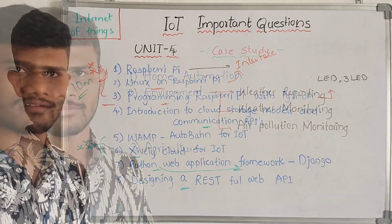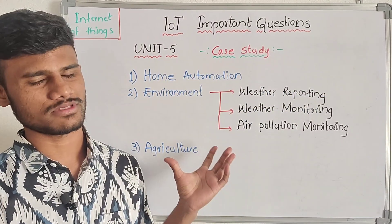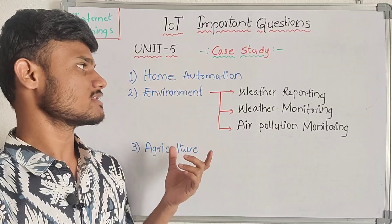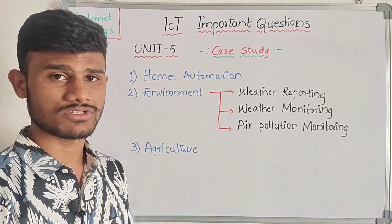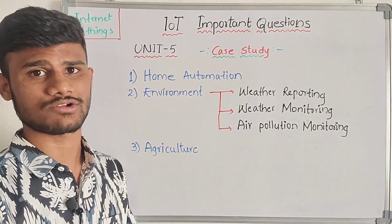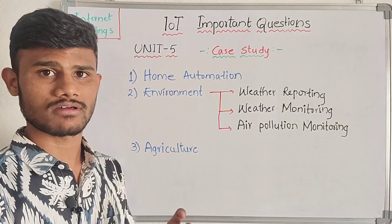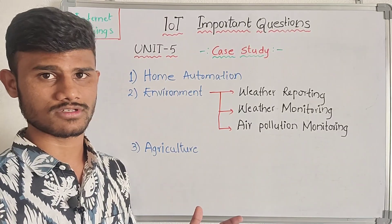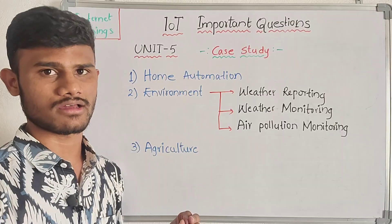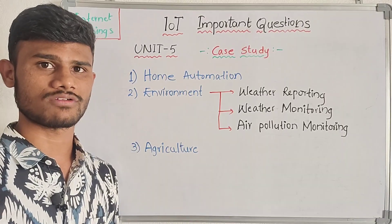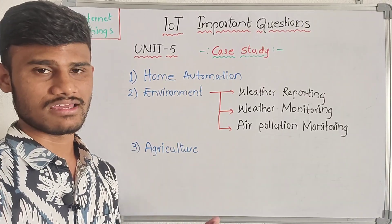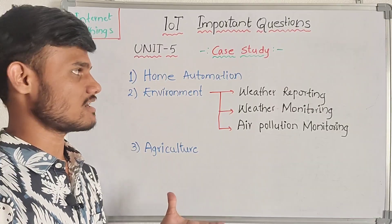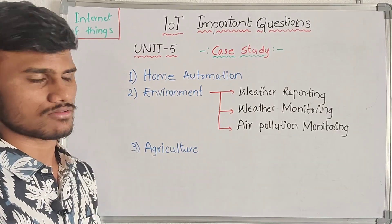This is completely the 4th unit. Now coming to our 5th unit — we have just case studies. Case studies are simple: home automation. We use IoT for home automation. For example, like automatic fan switching, automatically opening doors, sensors, water sensors, and fire sensors. The first question is how home automation is used.